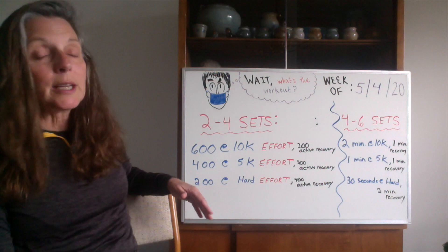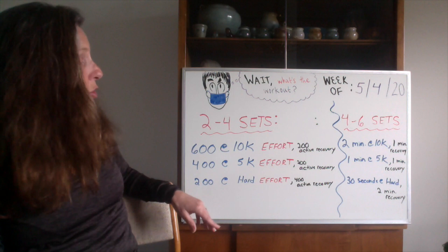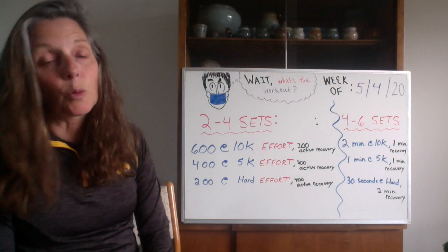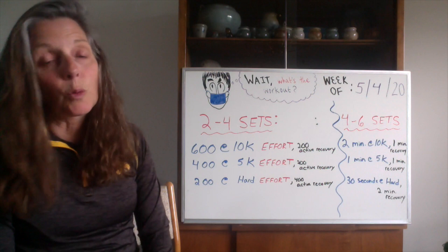If you're doing this more time-based, what I'm going to have you do for this week is four to six sets of two minute, one minute, 30 seconds. The two minutes are going to be at 10K effort, the one minute at 5K effort, and the 30 seconds hard effort. You have a minute recovery after the two minute and the one minute, and then you have two minutes after the 30 seconds.